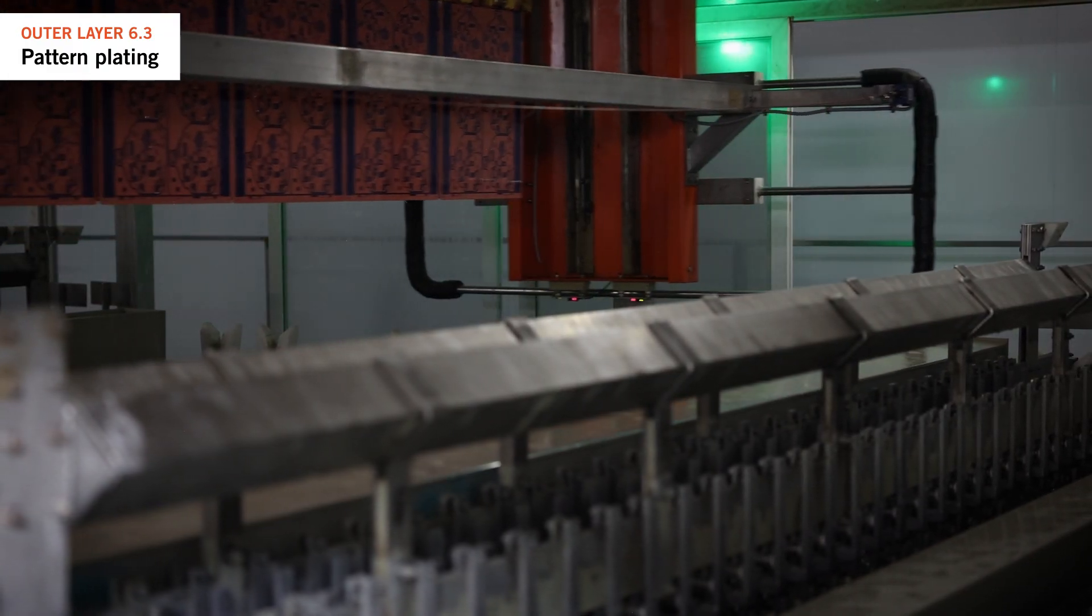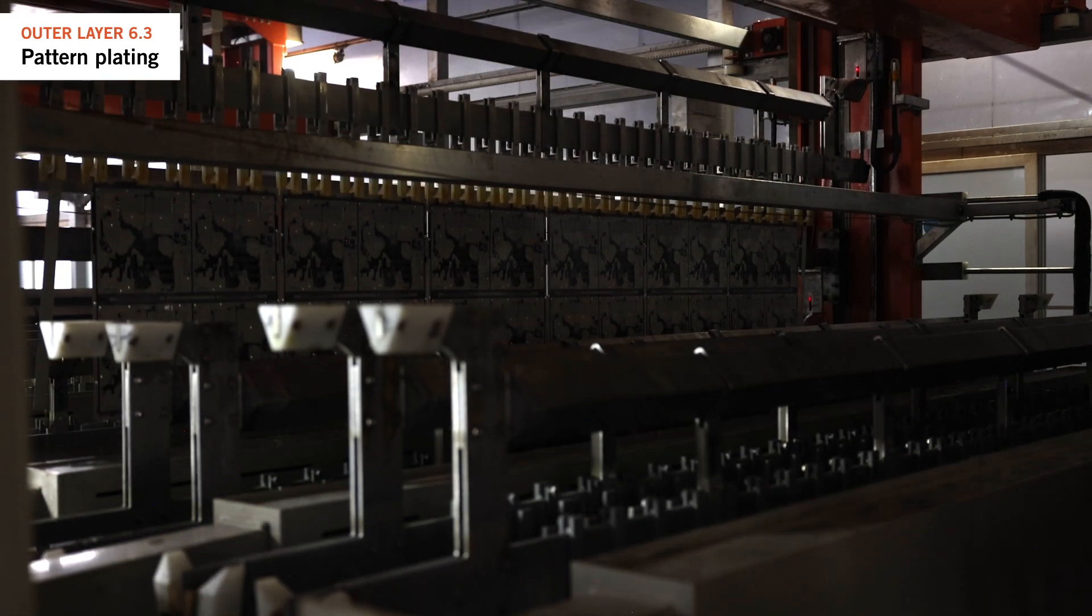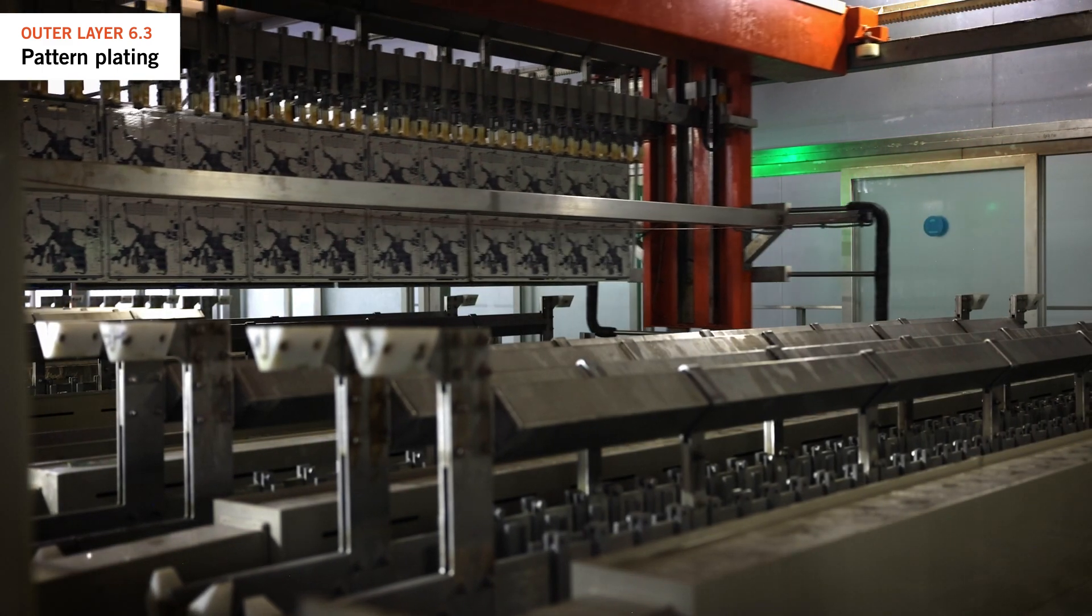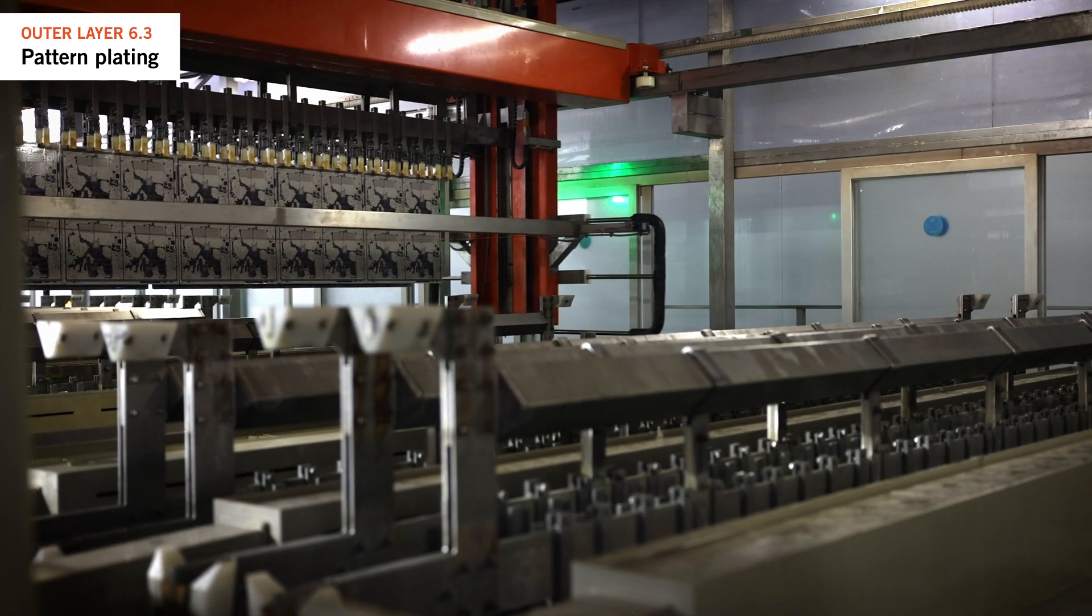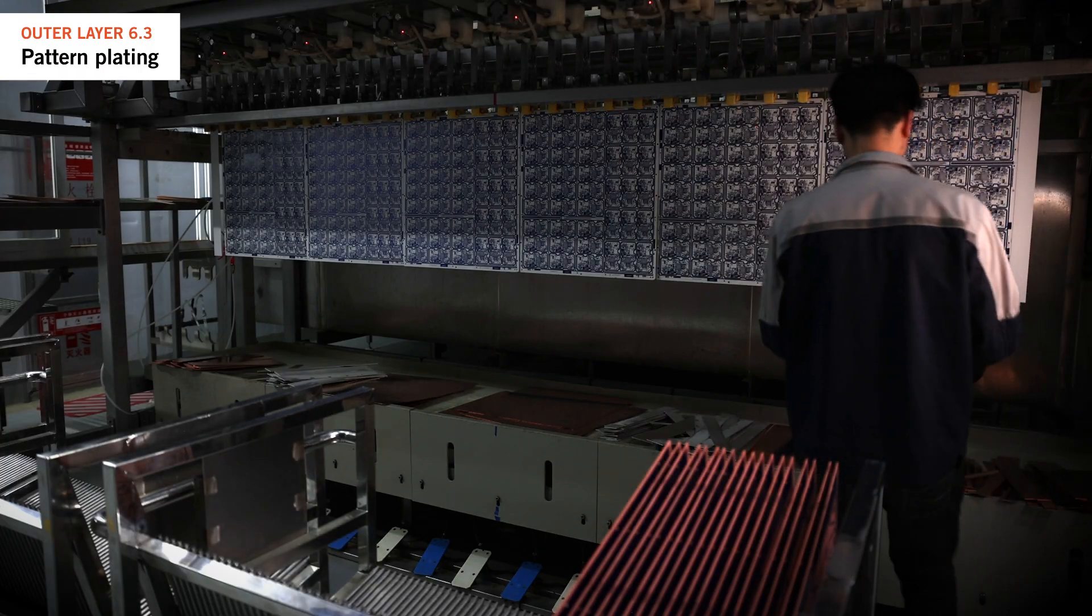Ensuring a uniform deposit can be a challenge due to design with isolated external areas potentially plating higher. The right setup on plating flight bars is important, as are thickness deposit checks to ensure good levels of plating uniformity are achieved across all panels.